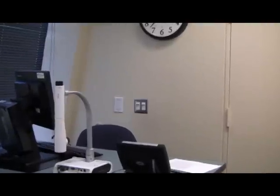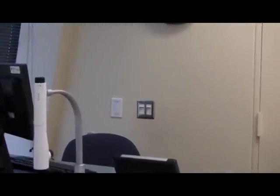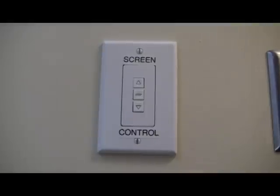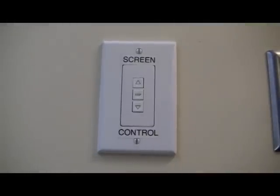If the screen has not come down, you will need to locate the screen control switch, which is located behind or next to the teacher's podium, usually directly next to the light switch. Press the switch into the fold down position to lower the screen.